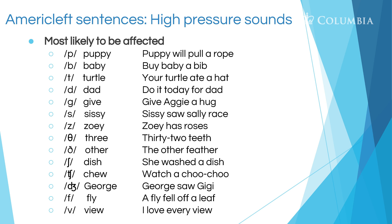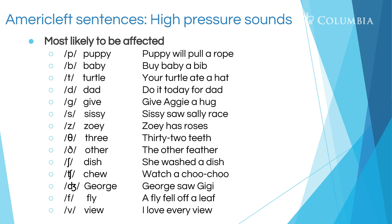Now we get into the high pressure sounds of English. The first one I generally start with is p: 'puppy' — 'Puppy will pull a rope.' I listen to whether that p can be produced — is the placement right? Is there an explosion of air? How does it work in a single word, and then in the sentence? For b: 'baby' — 'Buy baby a bib.' I'm listening for those sounds, looking for placement. Is there an explosion of air? Is it a high pressure sound, or is it more like 'mamey'? Is it a good 'baby'?